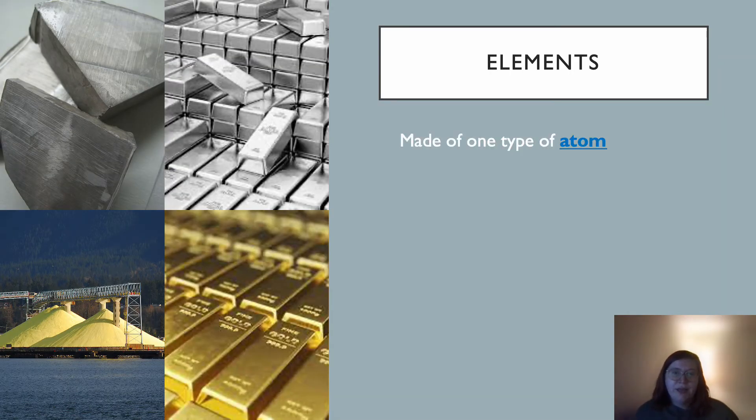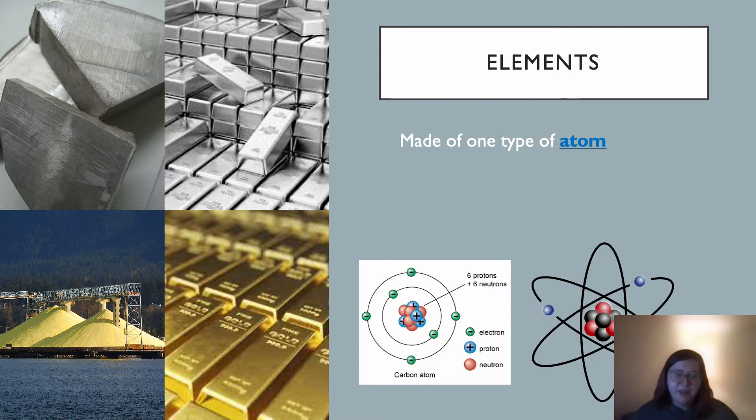Elements are made of one type of atom. So you learned about atoms last year, they can look like this diagram here, where you have your protons and neutrons in the nucleus in the center, surrounded by electron shells.